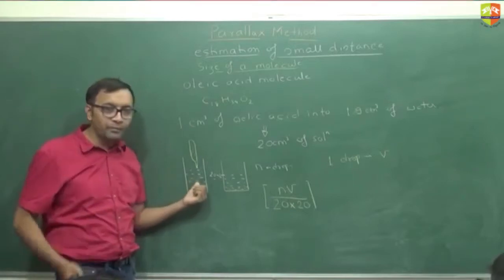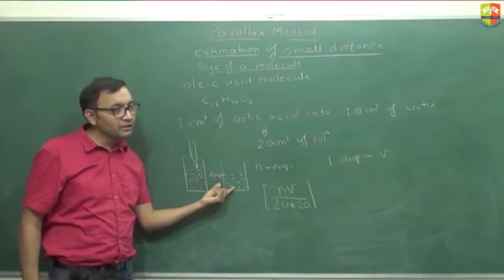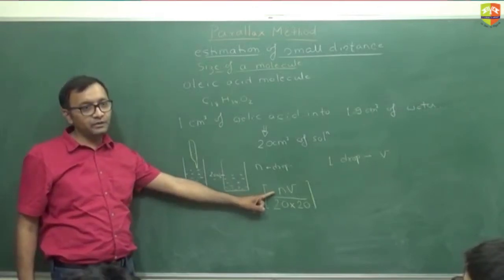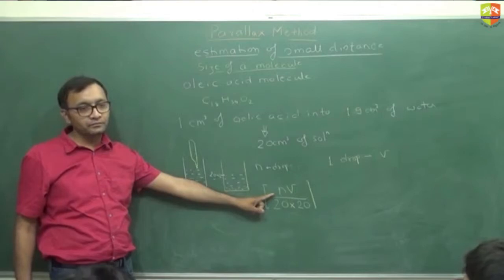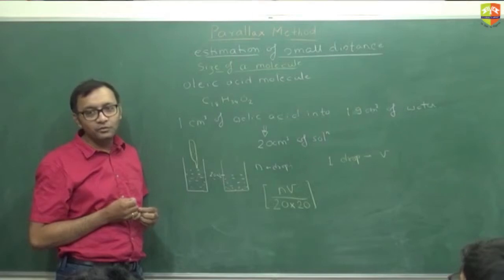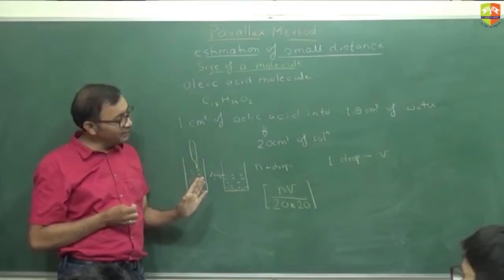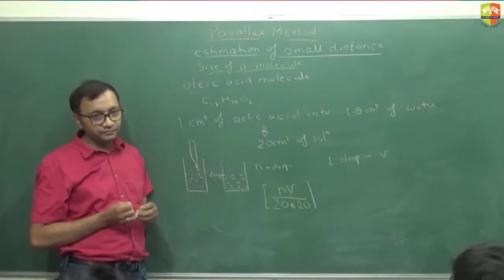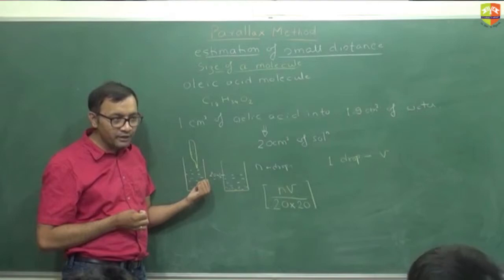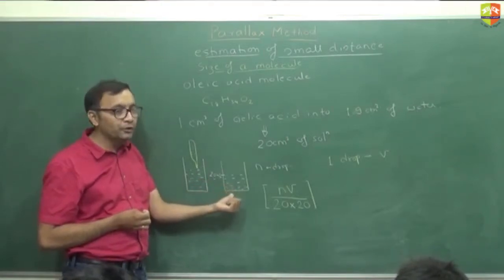You diluted it 20 times initially, then again 20 times, so the total dilution is 1 by 400. The volume of oleic acid in n drops is nV divided by 400. This experiment seems a bit unusual but this is how it is conducted. The procedure: first dilute to 20 ml, then take n drops, and again dilute to 20 ml.